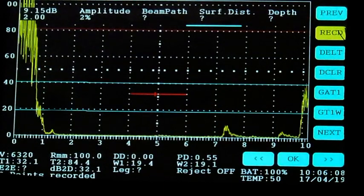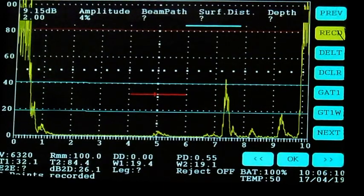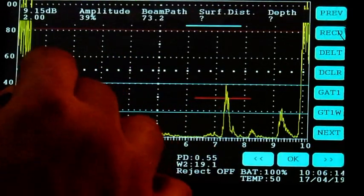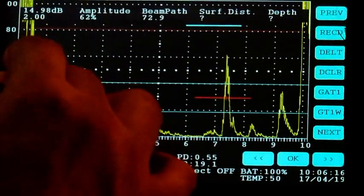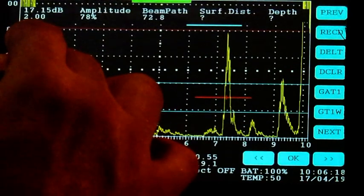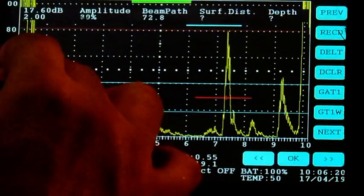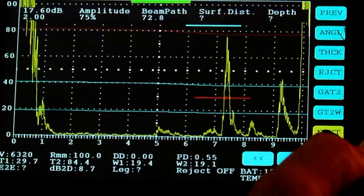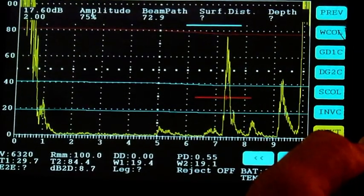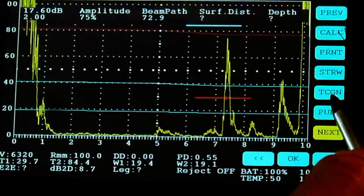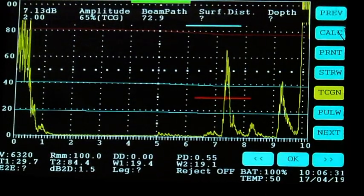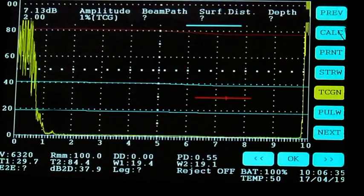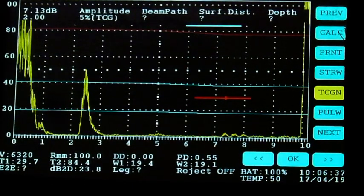Move the probe out to the third position, pick up the signal, and then raise the amplitude to the same level. Once it is done, click record and then engage the TCG function. The TCG will be engaged, so now you can see all the signals are actually equalized. So irrespective of distance, the signals will carry the same amplitude.